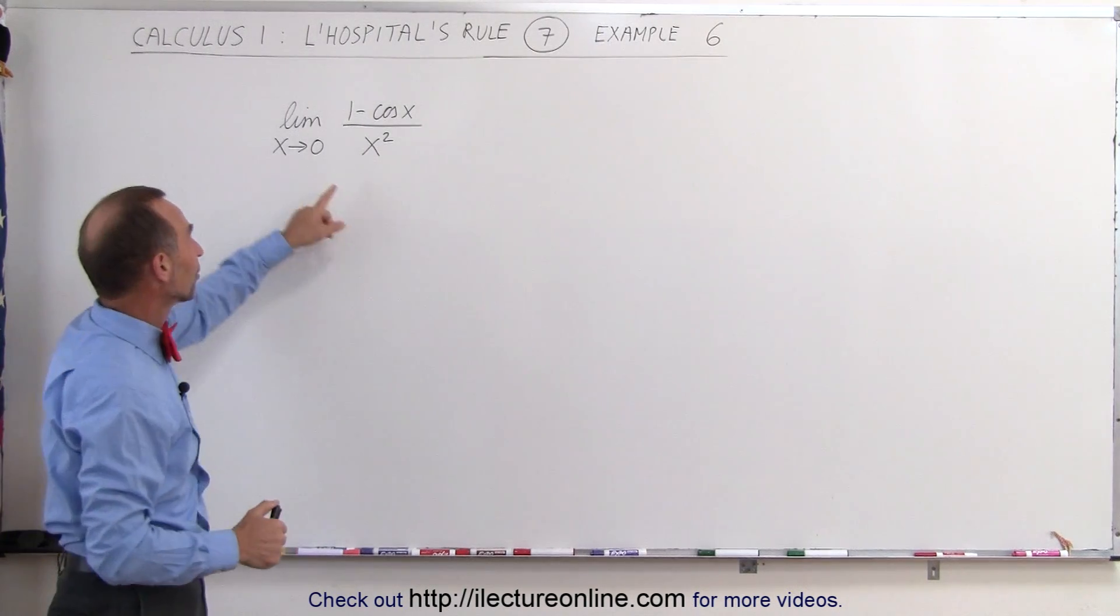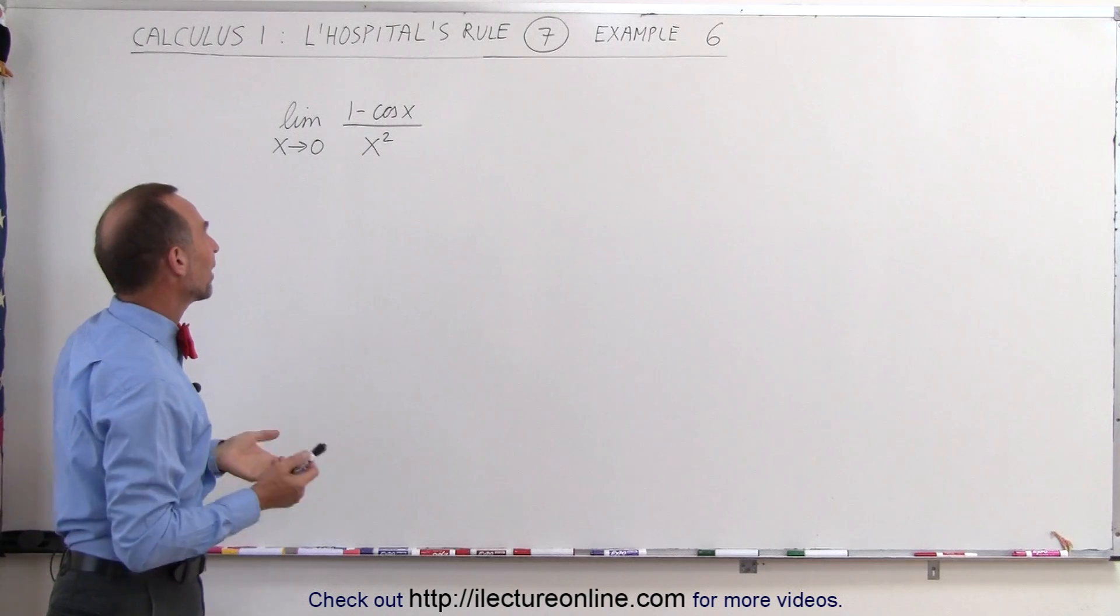We're supposed to take the limit as x approaches 0 of 1 minus the cosine of x divided by x squared.